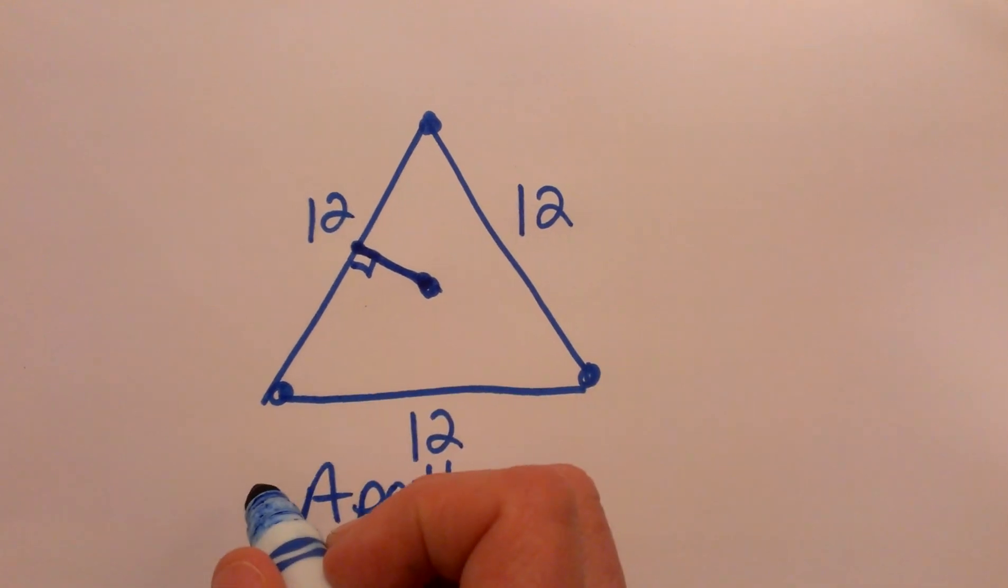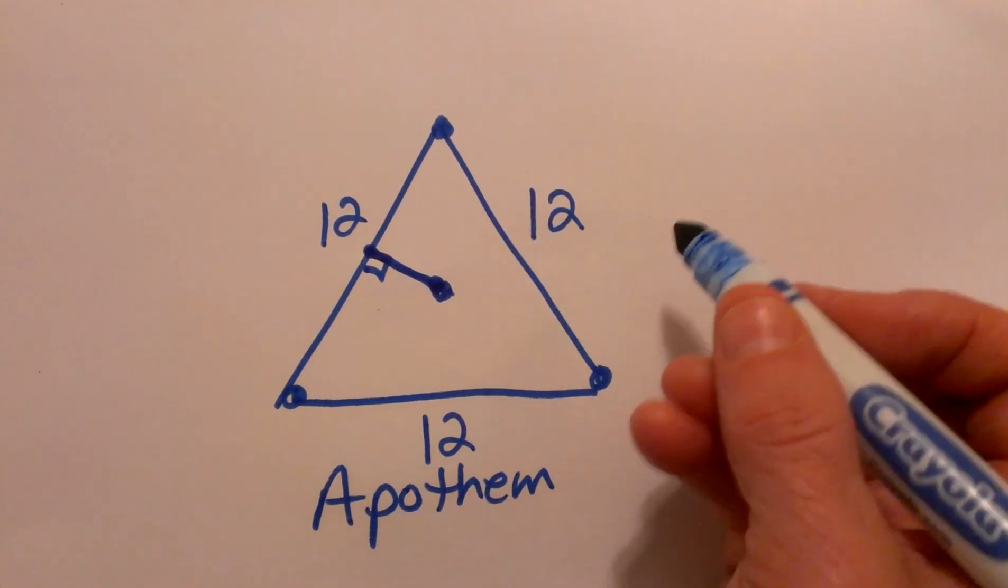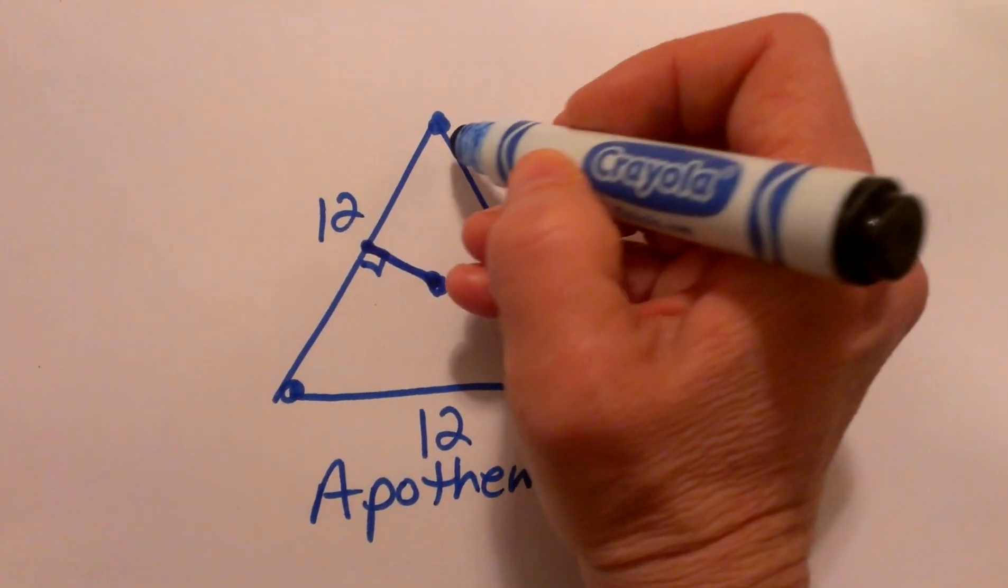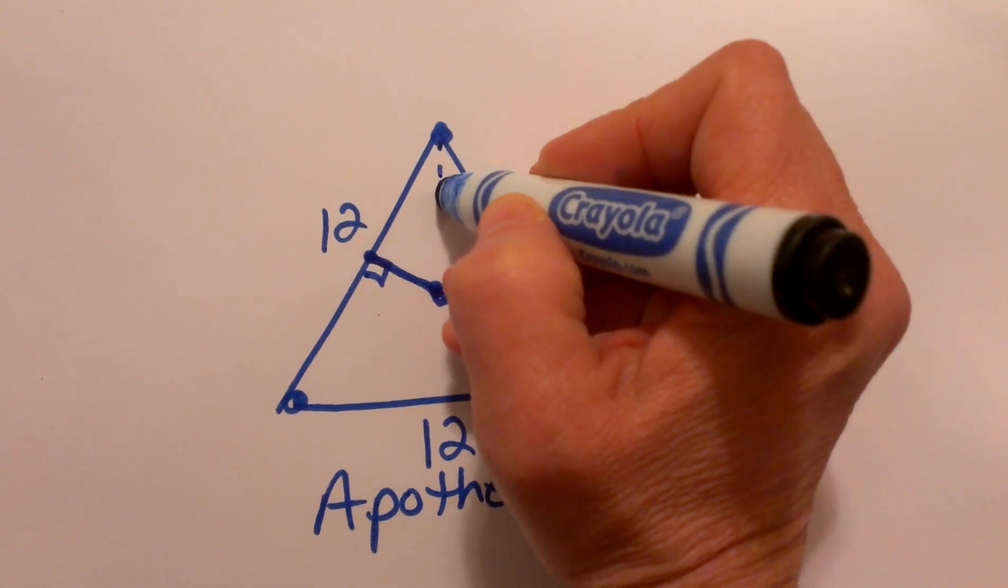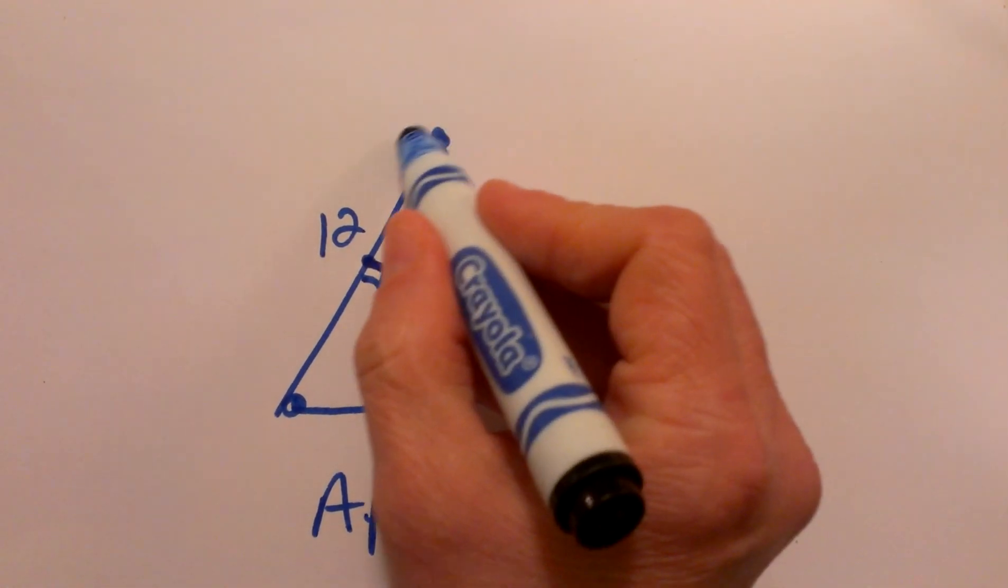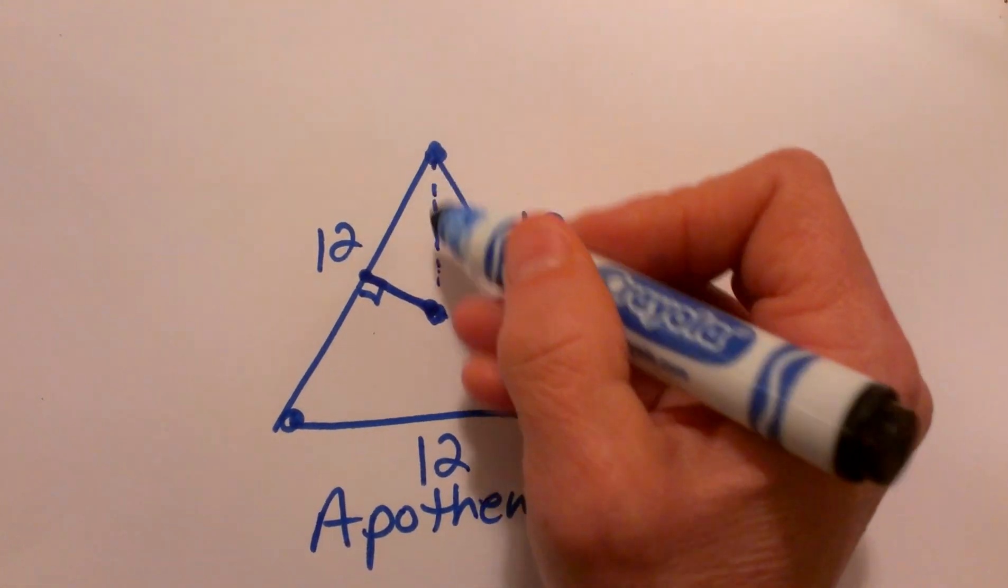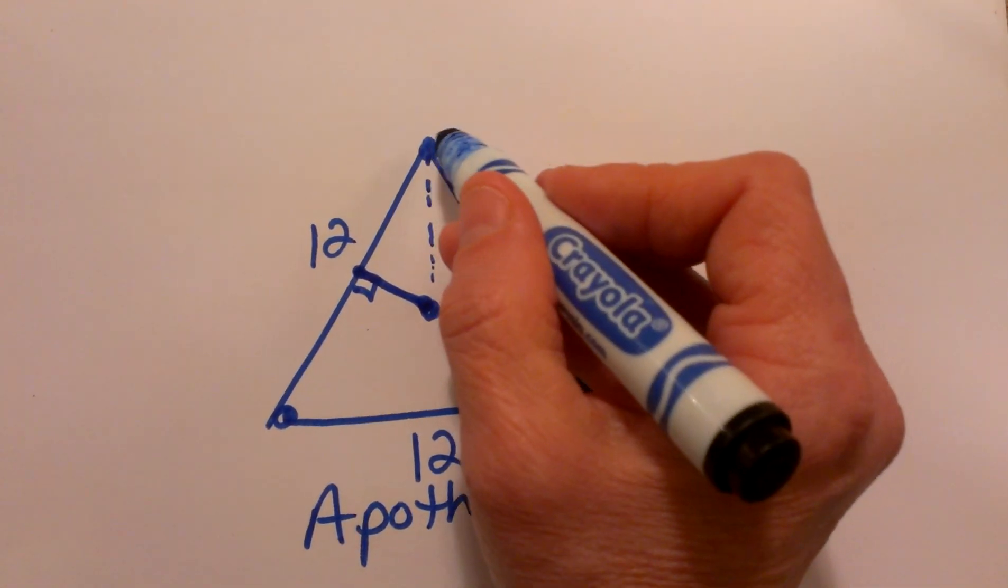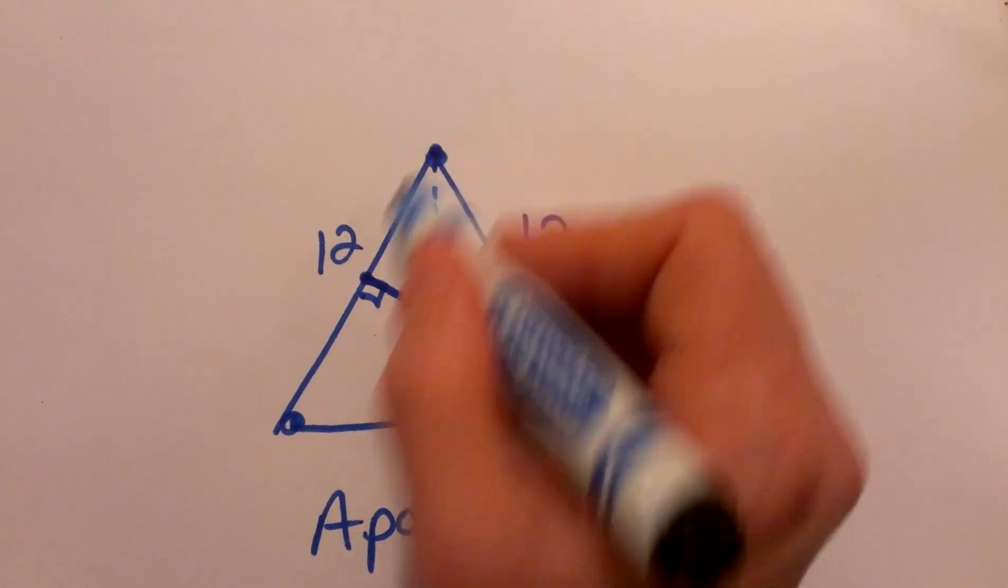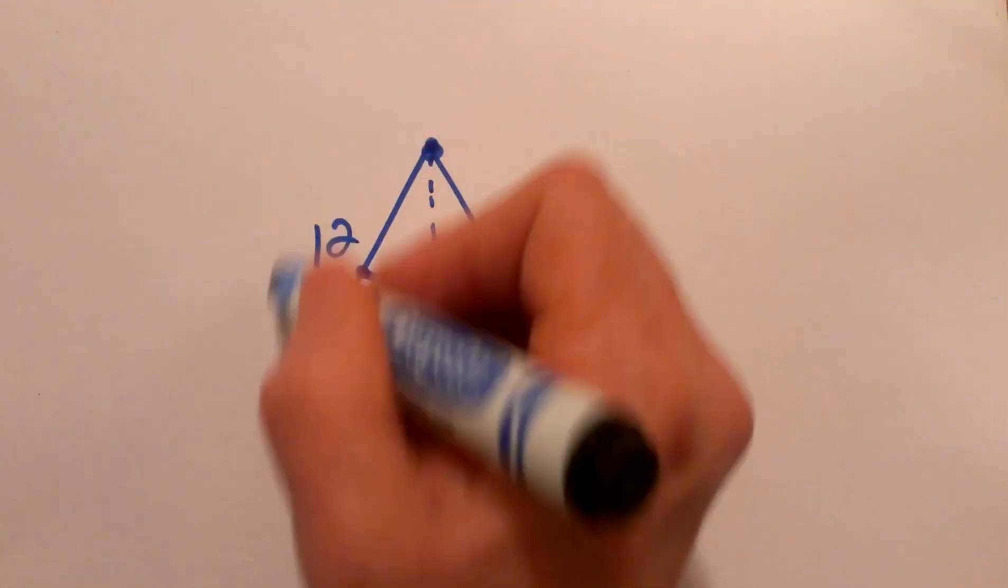So I need to find that length. In order to find that length, I can draw in a couple of strategic lines. I am going to draw in this radius, and it is a radius because if I draw a circle all the way around this equilateral triangle, that would be the radius. That means that each vertex would be on the circle.